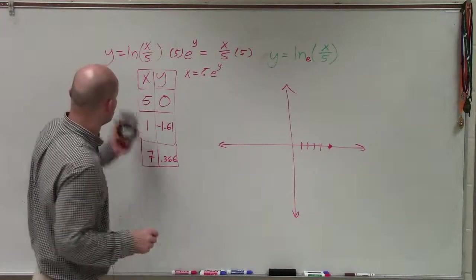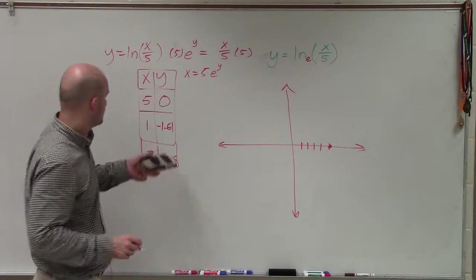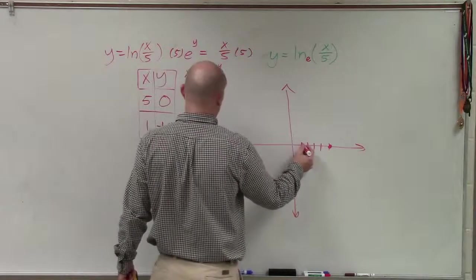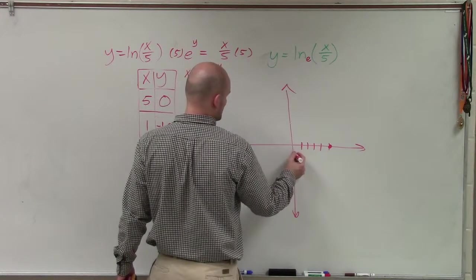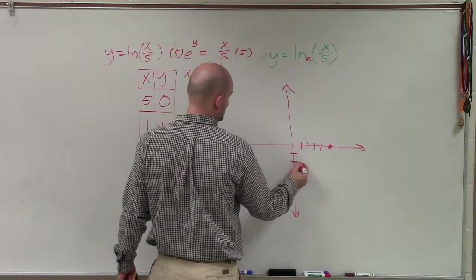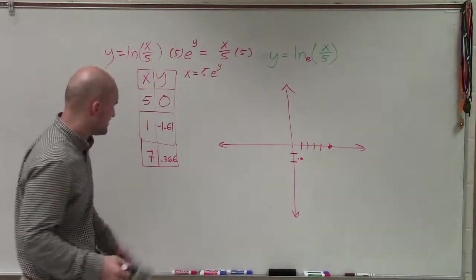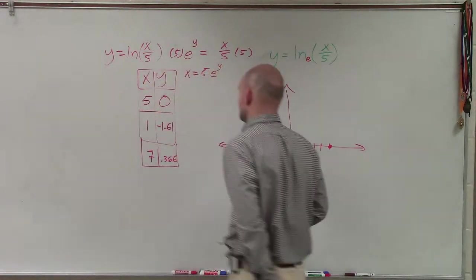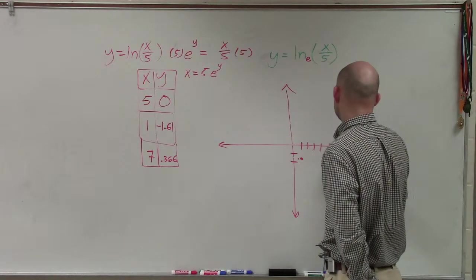So therefore, when x equals 1, I have negative 1.61. So let's say that's 1, that'd be 2. And then when x equals 7, I'm at 0.366. So 1, 2, 3, 4, 5, 6, 7.